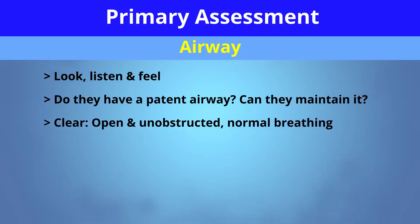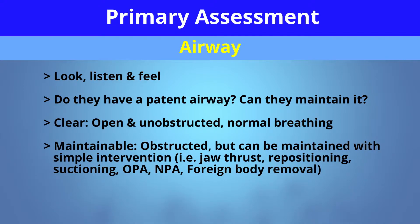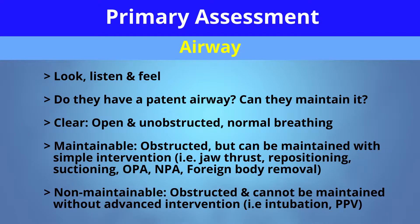Is my airway clear, unobstructed, or is there normal breathing? Is it maintainable? If not, it might be obstructed. Can you intervene and provide maintenance of the airway with simple interventions such as jaw thrust, repositioning, suctioning, providing an OPA or NPA, or if there is a foreign body, does it need to be removed? If it's non-maintainable and obstructed and cannot be maintained without an advanced intervention, consider intubation and positive pressure ventilation.